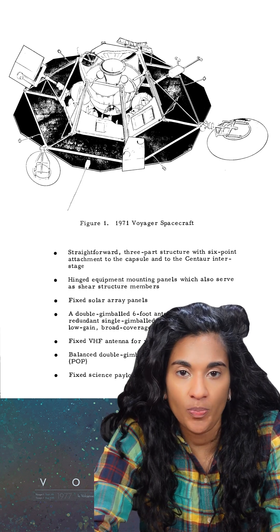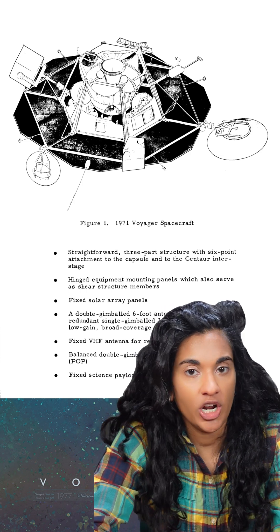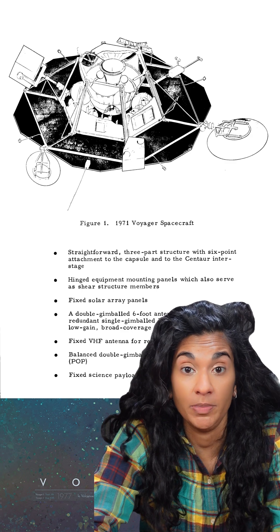Voyager 1 doesn't have any extra power to flip on that heater, and they didn't want to risk turning off a science instrument because they didn't know if they'd be able to turn it back on.